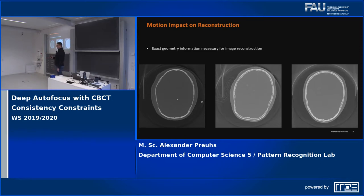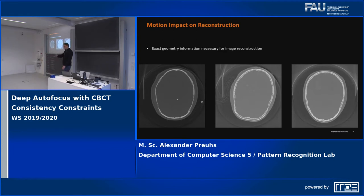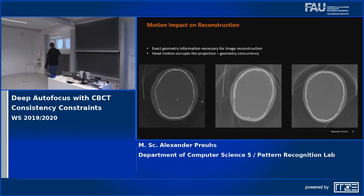When we want to reconstruct tomographic images from projection images, we need exact information about the geometry — we need to know precisely from which orientation and position each view was acquired. But when this geometry information is not fulfilled because the patient moved, we get artifacts. The information acquired on the detector gets smeared back to wrong locations.